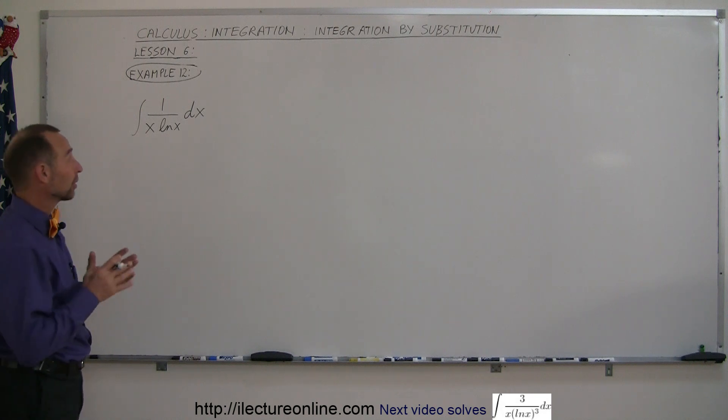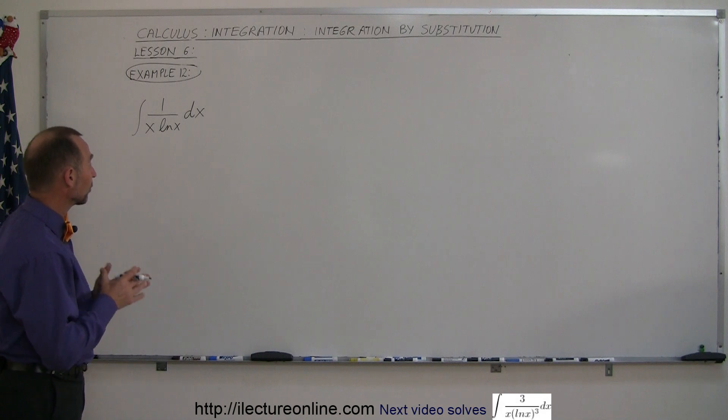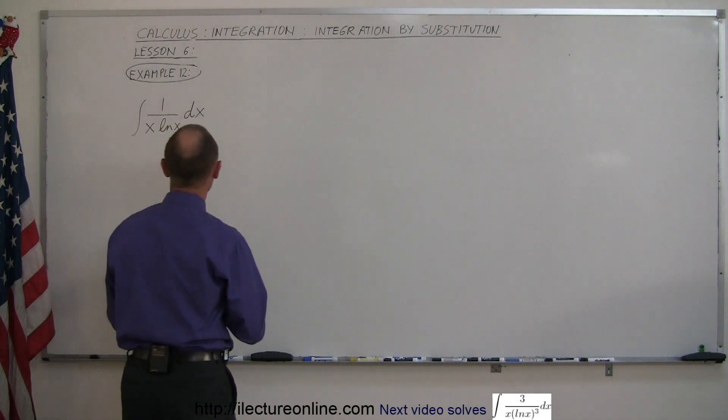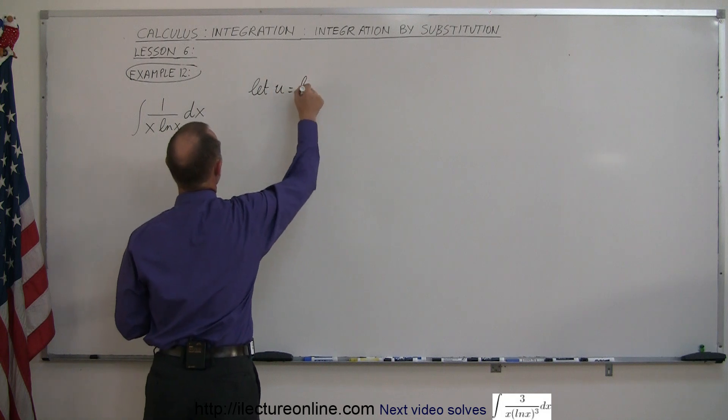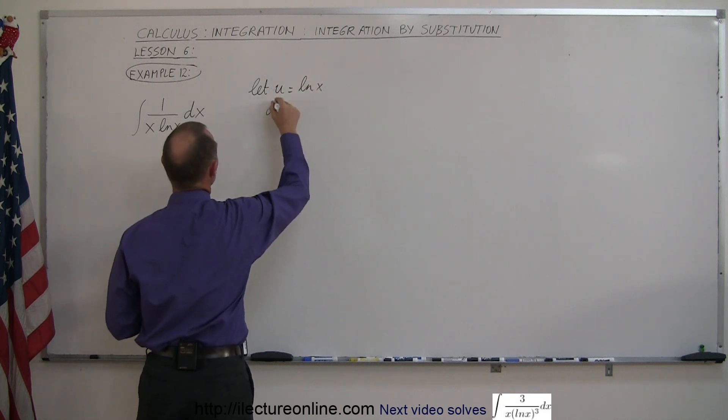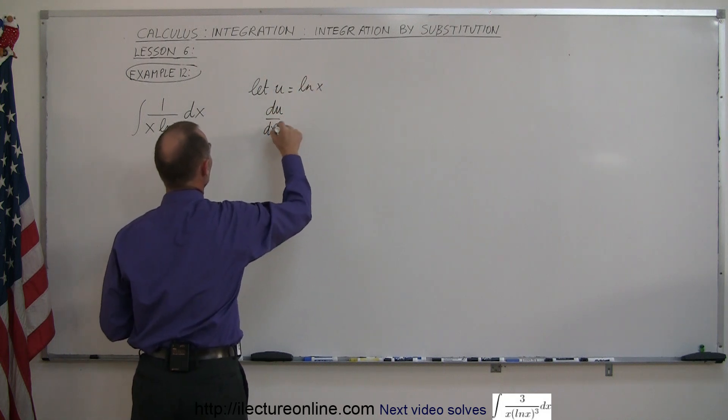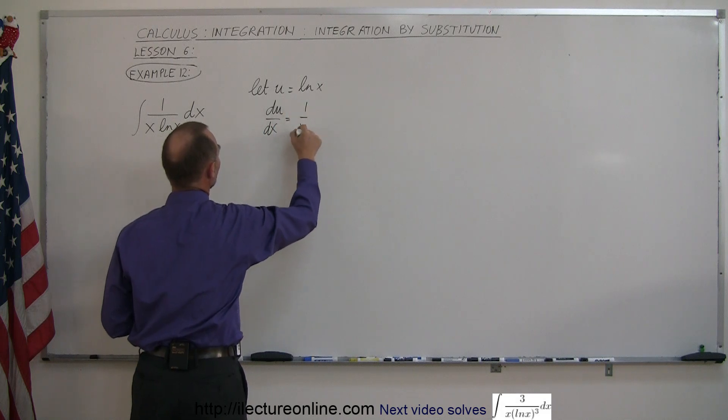When you use the method of substitution, you want to substitute natural log of x for u. So let u equal the natural log of x, which means that du/dx is equal to the derivative of that, which is 1 over x. So du is equal to 1 over x dx.